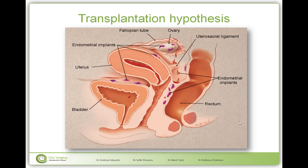The most commonly accepted hypothesis as to how endometriosis occurs is a transplantation hypothesis, whereby it is believed that endometrial cells during menstruation will flow back through the fallopian tubes into the peritoneal cavity. These endometrial cells will implant on the peritoneal surface and in some cases will even infiltrate underneath it. In that case we talk about deep infiltrating endometriosis, that usually occurs on the utero-sacral ligaments, in the recto-vaginal septum, on the recto-sigmoid colon, or even on the bladder.